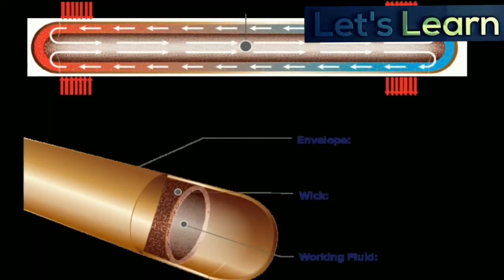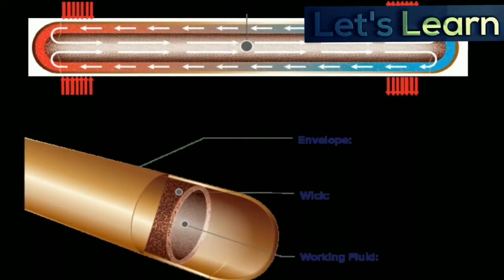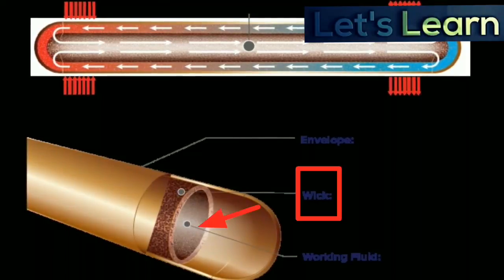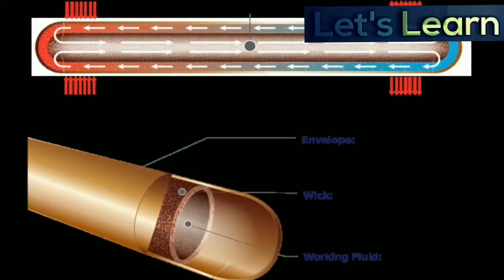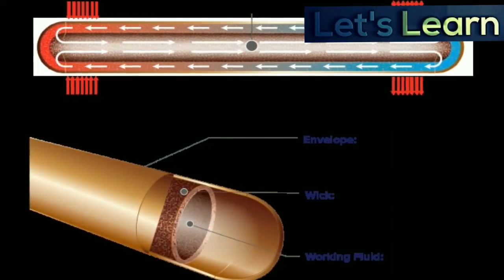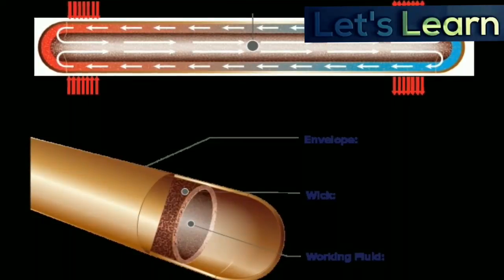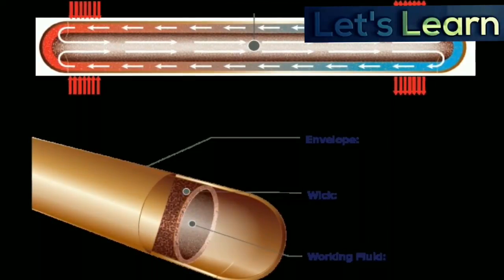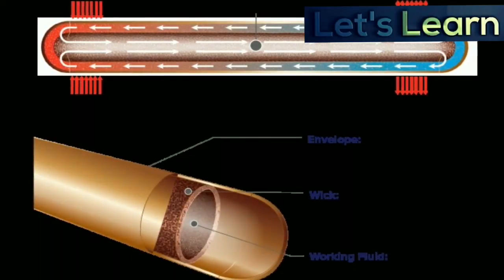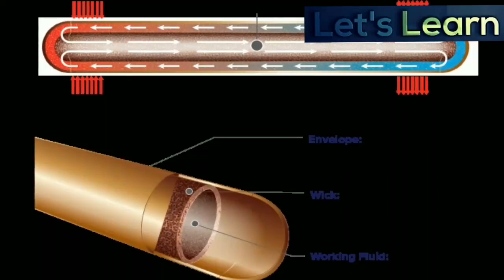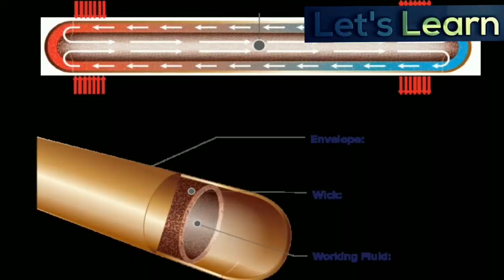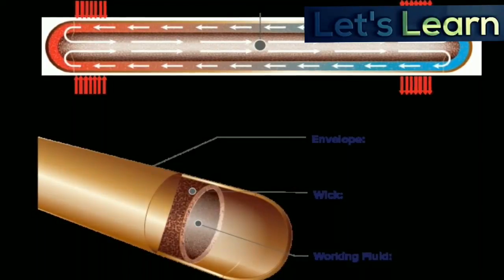In a standard heat pipe, the condensed liquid is returned to the evaporator using a wick structure, exerting a capillary action on the liquid phase of the working fluid. The wick structures used in the heat pipe include sintered metal powder, screen, and grooved wicks, which have a series of grooves parallel to the heat pipe axis. When the condenser is located above the evaporator in a gravitational field, gravity can return the liquid.